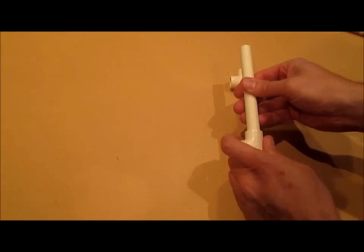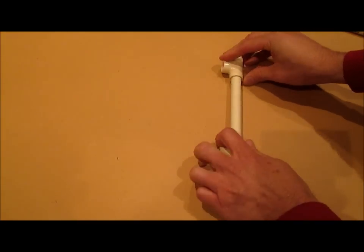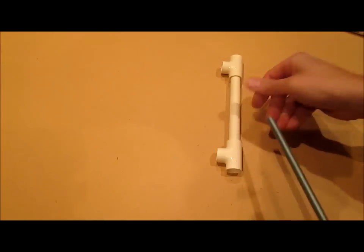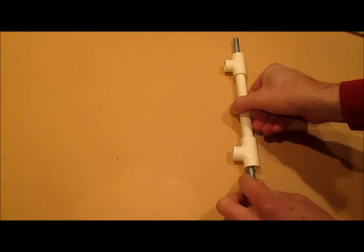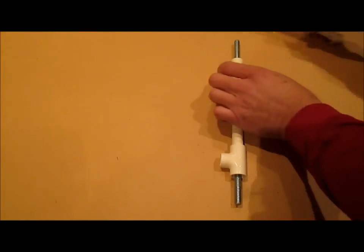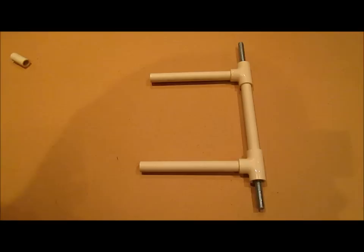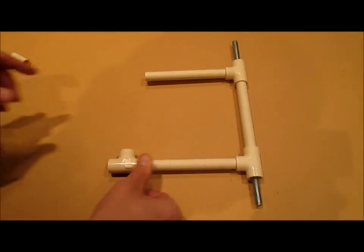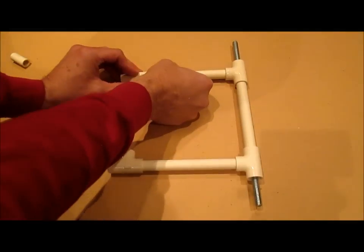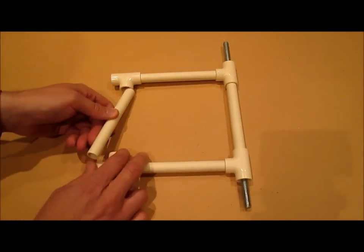Start with two T's and connect them with one piece of pipe like this. That is going to be eventually your axle. Now go forward with two more pieces here and here and then two more T's facing inward like this. Put a pipe between them.